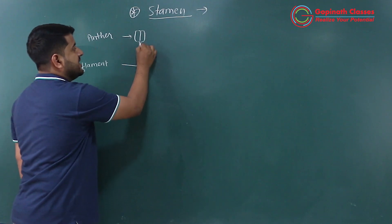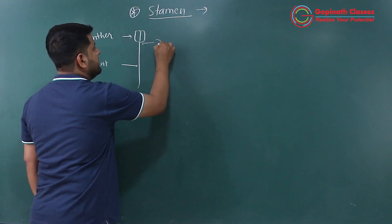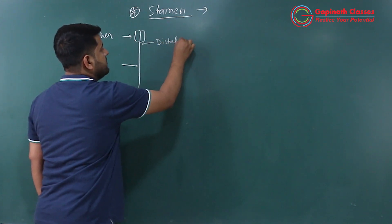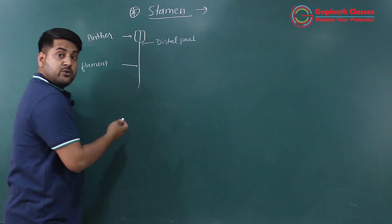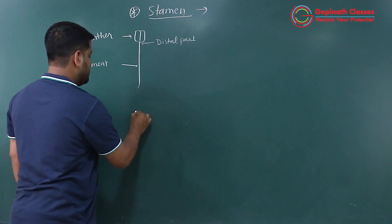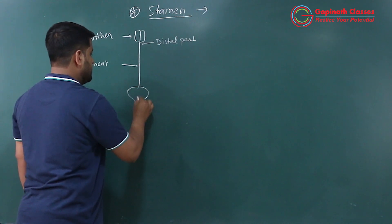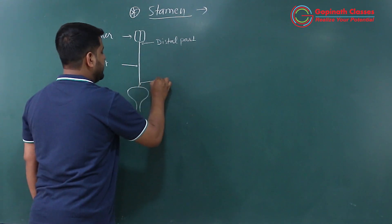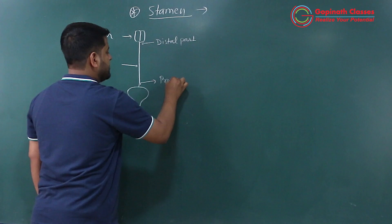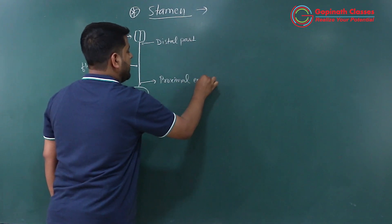The part where anther is attached is the distal part. The part which is attached is the proximal end part.